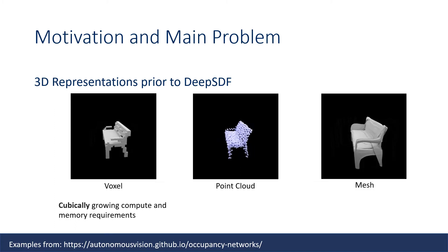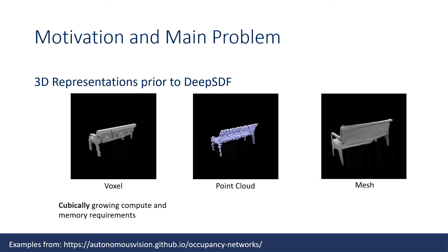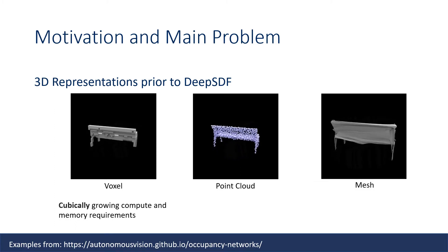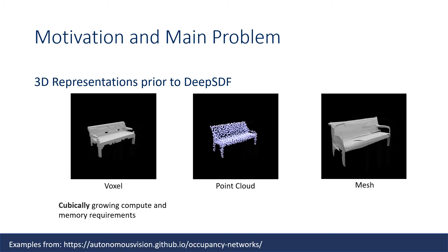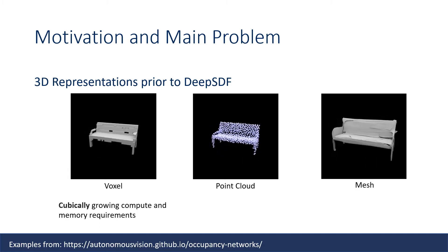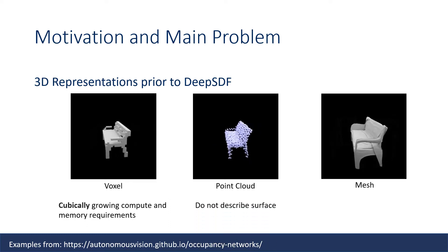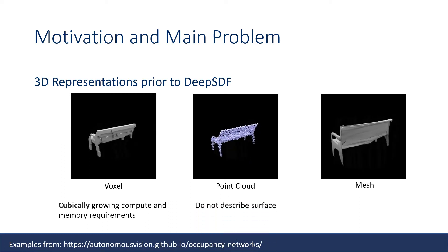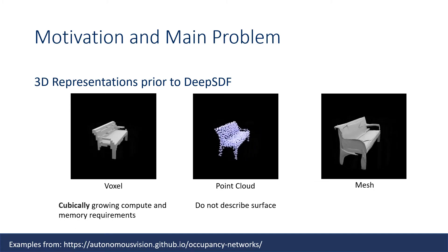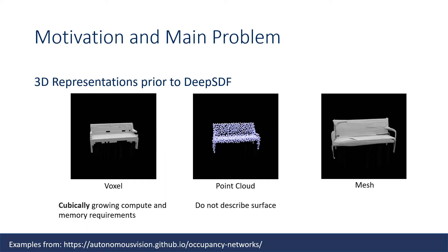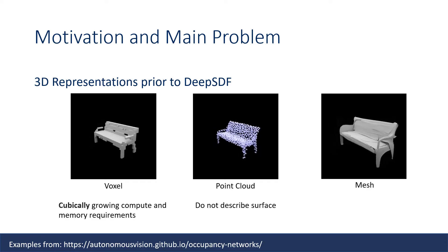Voxel can represent arbitrary topology, but it has cubically growing compute and memory requirements. More compact representation, point cloud, does not describe surfaces. Methods that produce triangular mesh directly at that time are limited to the topology of the template they are using. Also, they often exhibit artifacts from inaccurate deformation, as shown in the example.